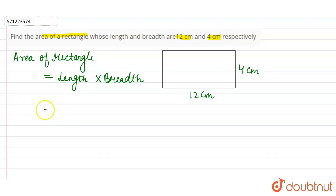We are given that the length of the rectangle is 12 centimeters and the breadth is 4 centimeters. So we multiply 12 and 4. 12 into 4 is 48 centimeter square. So the area of the rectangle equals 48 centimeter square.